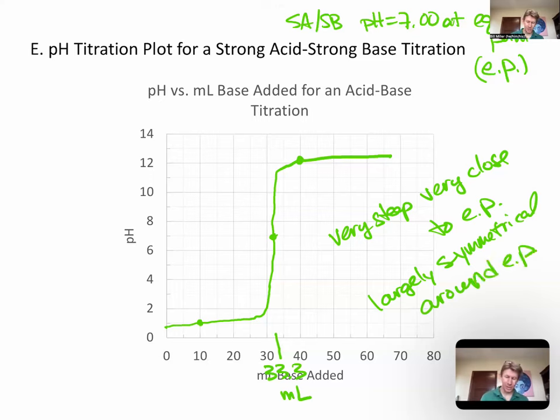So it should be just as steep down here, right before as here, and that's how you sketch a pH titration plot for a strong acid, strong base titration.